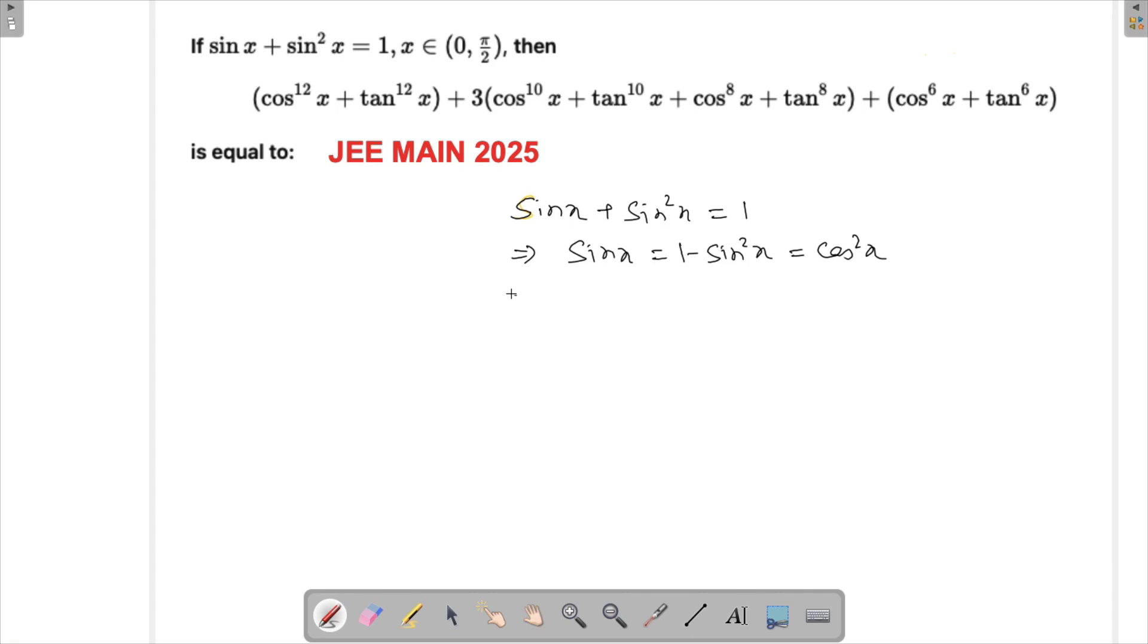Since we're seeing tan here, we'll try to convert it into tan also. So we can say sin x equals to sin x by cos x equals to cos x. We took one of the cos x from this side, so tan x is coming out to be equal to cos x.